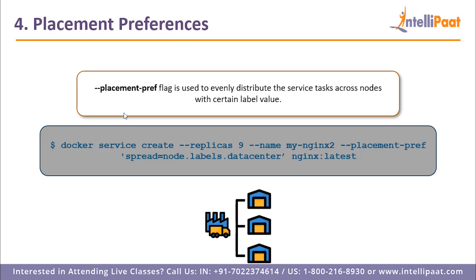Finally, you have the `--placement-pref` flag, which is used to evenly distribute the service tasks across nodes with a certain label value. Basically if you have nine replicas and want them equally distributed among your nodes, you would use this flag.